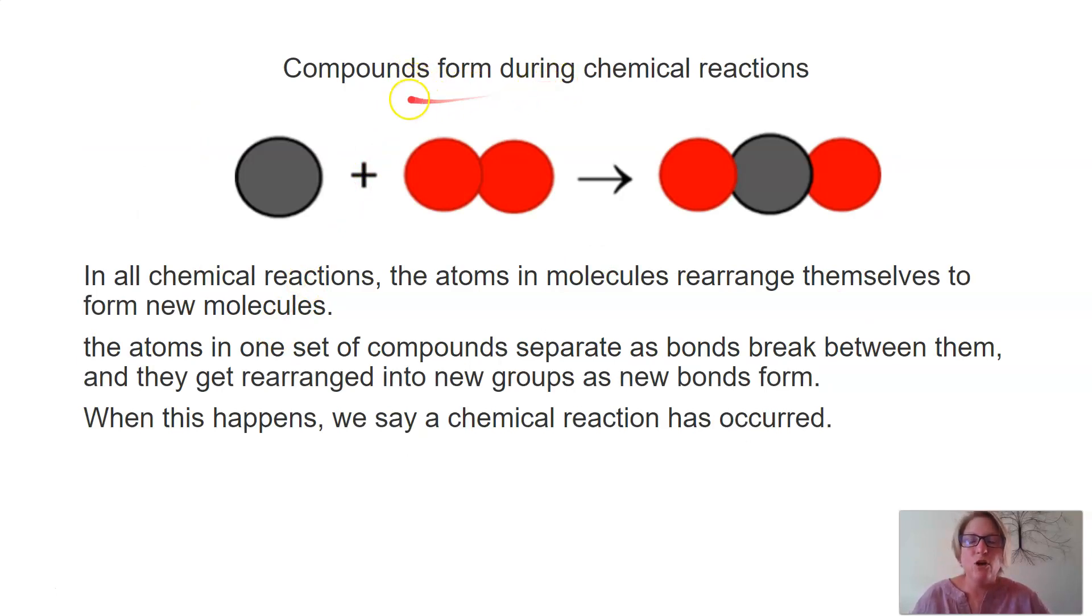Compounds also form during chemical reactions. So here we have one atom combining with a molecule made up of two atoms. And here we have a molecule when we show how they chemically combine. So in chemical reactions, the atoms and molecules arrange themselves to form new molecules. So we know that this is a chemical reaction because we have a plus sign here, and we have an arrow showing that the reaction happened. The atoms in one set of compounds separate as the bonds break between them, and they get rearranged into new groups as new chemical bonds form. When this happens, we say that a chemical reaction has occurred. And in one of our future lessons, we will have a look at compounds and chemical reactions.